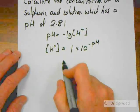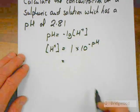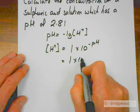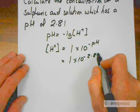And in this case, that's going to be 1 times 10 to the minus 2.81.